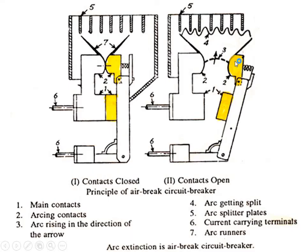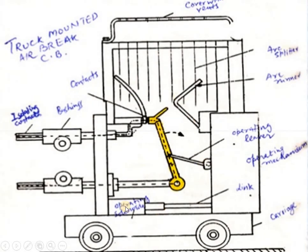In the circuit diagram, the contacts are initially closed and open during fault conditions. Contact number 1 denotes the main contact and number 2 denotes the arcing contact where the arc takes place. When the arc occurs, it gets split by the arc splitter. The arc rises in the direction of the arrow and gets split by the arc splitters. Number 6 denotes the current carrying terminals and number 7 denotes the arc corners. The air circuit breaker can also be mounted on a trolley.